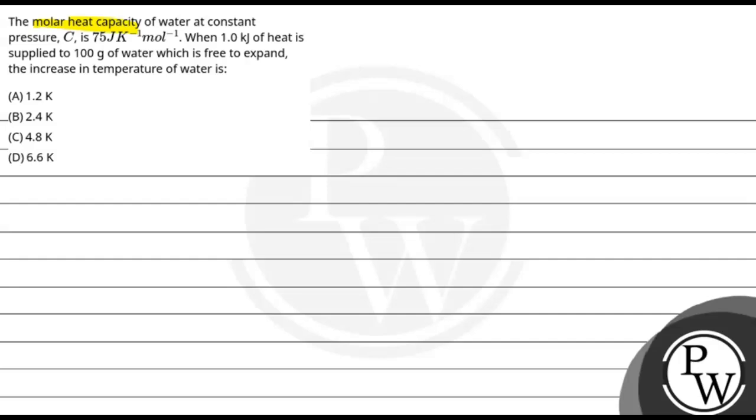So here we have molar heat capacity of water is given. And we're told that 1 kJ of heat is supplied to 100 g of water, which is freely expanding.